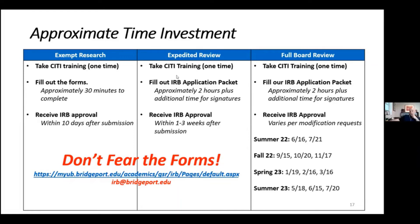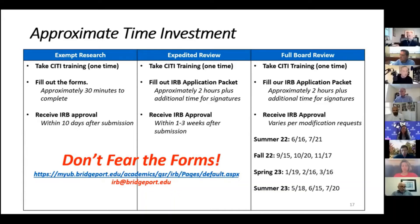For expedited review, you still have to take that training. You'll fill out an IRB application packet, which takes about two hours plus additional time for signatures. You'll get your IRB approval or feedback within one to three weeks after submission. It's more involved.